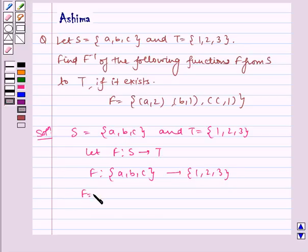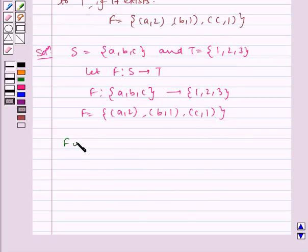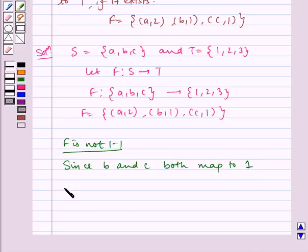Now f = {(a, 2), (b, 1), (c, 1)}. Now f is not one-to-one. Since b and c both map to 1, it implies f is not one-to-one, which implies f is not a bijection.